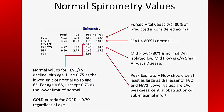Airflow obstruction implies that the FEV1 is reduced out of proportion to the FVC. Normal values for the FEV1 to FVC ratio decline with age. I have used a lower limit of normal of 0.75 up to age 65, and it has worked well for me. Studies on COPD use an inclusion criteria of FEV1 to FVC less than 0.70 regardless of age.